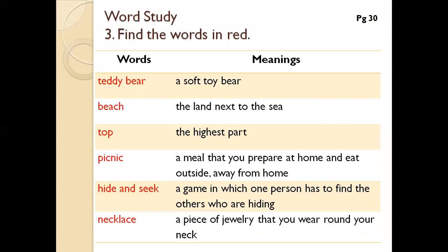Page number 30, question number 3 — there are five words in red. These are vocabulary words in all three memories. Teddy bear: a soft toy bear. Beach: the land next to the sea. Top: the highest part. Picnic: a meal that you prepare at home and eat outside, away from home. Hide and seek: a game in which one person has to find others who are hiding. Necklace: a piece of jewelry that you wear around your neck.